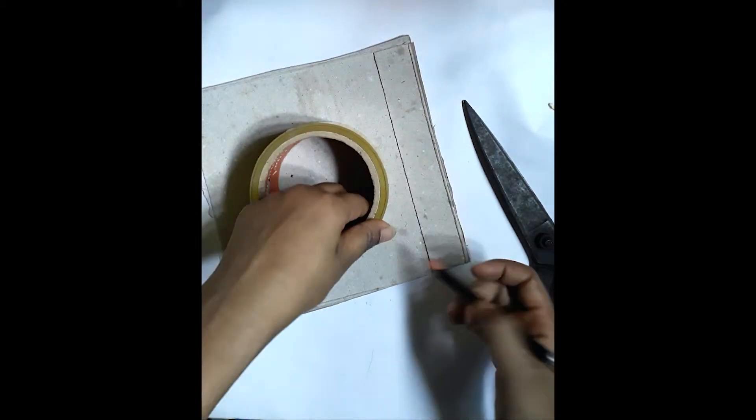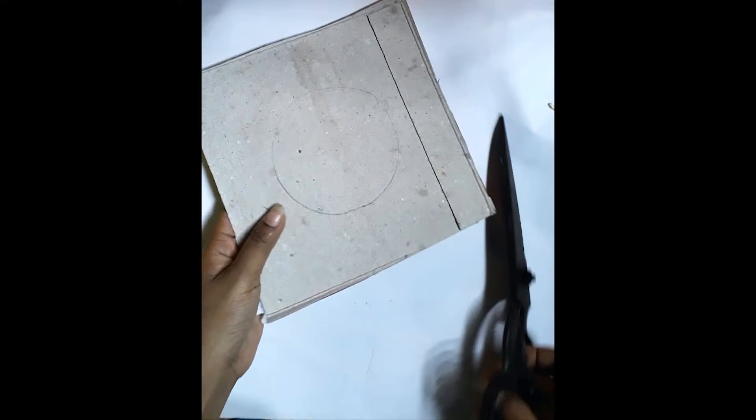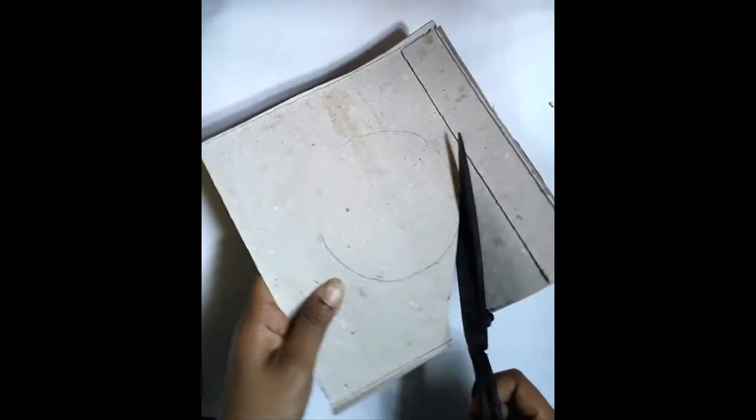Take a hard paper and draw a circle with a tape by a pencil. Now cut the hard paper through the circle line by a scissor.